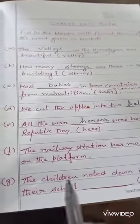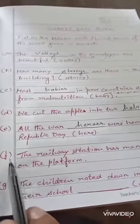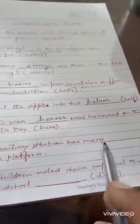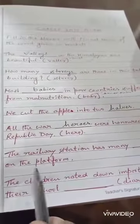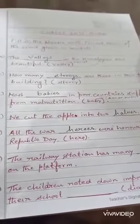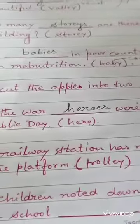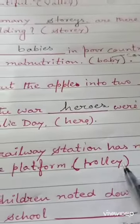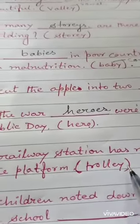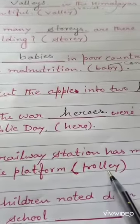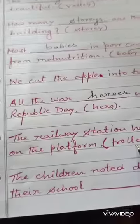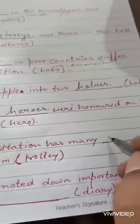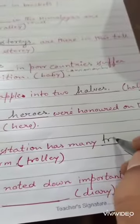Now here you see question number F: 'The railway station has many dash on the platform.' In the bracket it is given 'trolley.' Again, before Y, what is there? E. So what will be added? S. So it will become 'trolleys.'